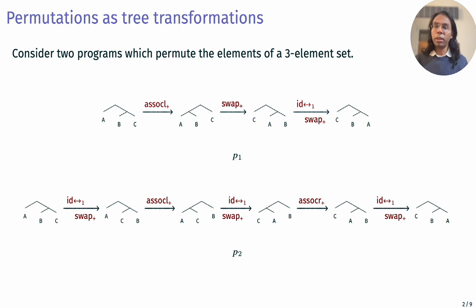I'll start with a motivating example. Consider two programs which permute the elements of a three-element set, A, B, C. We present these permutations as tree transformations. The first program, P1, rotates the tree to the left, then swaps the left and right children, and then finally swaps the rightmost leaves. The second program, P2, swaps the rightmost children, then rotates the tree to the left, swaps the leftmost children, rotates the tree to the right, and then finally swaps the rightmost children.